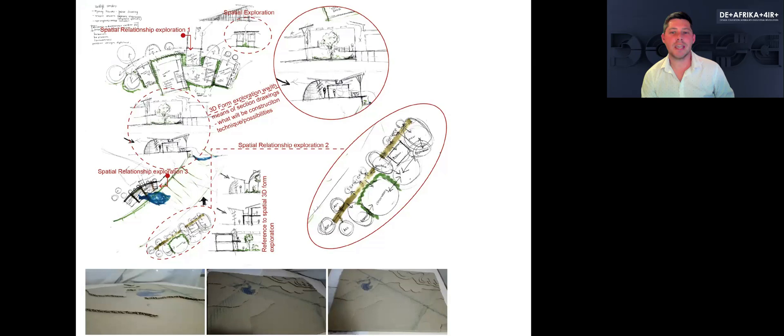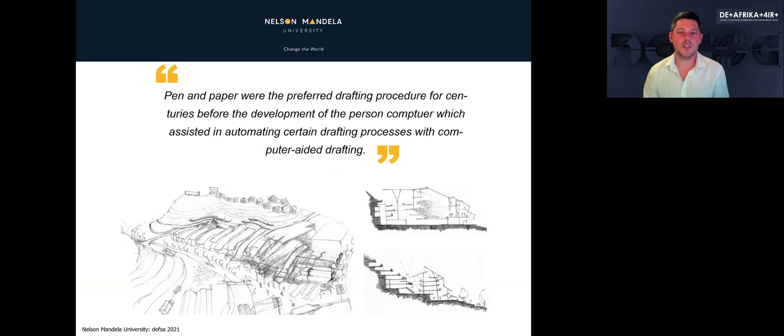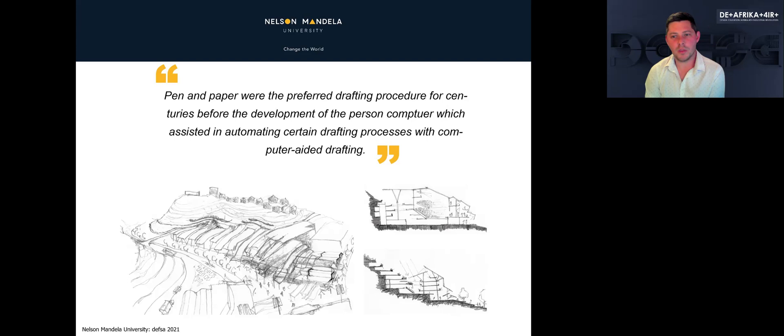The role that communication plays in the developing of an architectural student in the design studio is of utmost importance. In particular, the tools to achieve this become critical to their ability to succeed. Pen and paper were the drafting procedures for centuries before the development of the personal computer that automated drafting processes through computer-aided drafting, CAD. This process of manually entering and changing data was time consuming. The conventional method holds limitations as analyses are carried out separately and are prone to errors, whilst being painstakingly slow and sometimes misunderstood.